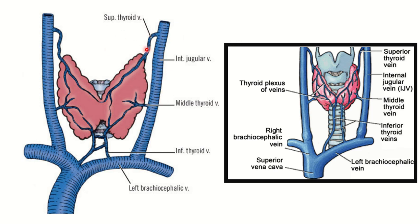The thyroid gland is drained on each side by three veins: the superior thyroid vein, middle thyroid vein, and inferior thyroid vein. The superior thyroid vein drains into the internal jugular vein, and the middle thyroid vein also drains into the internal jugular vein. The inferior thyroid vein drains into the brachiocephalic vein — the left brachiocephalic vein on the left side and the right brachiocephalic vein on the right side.